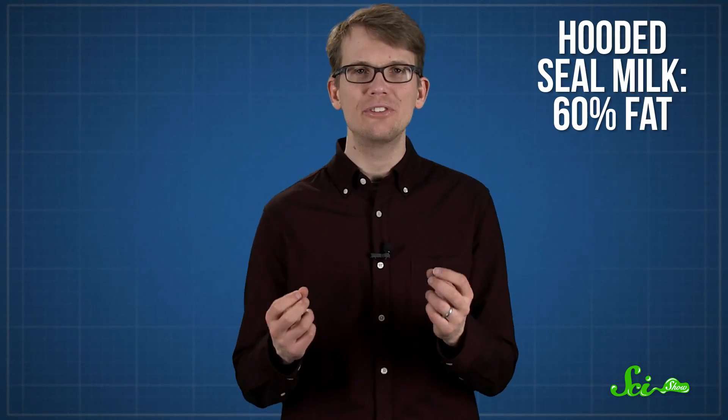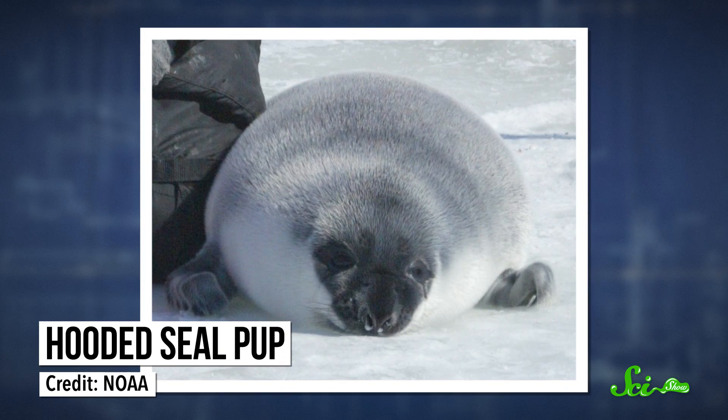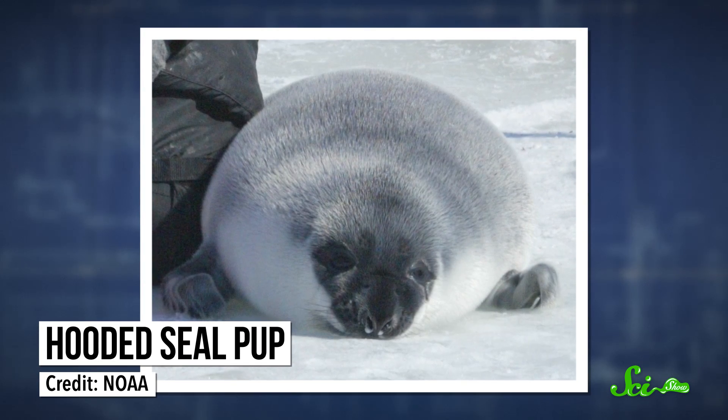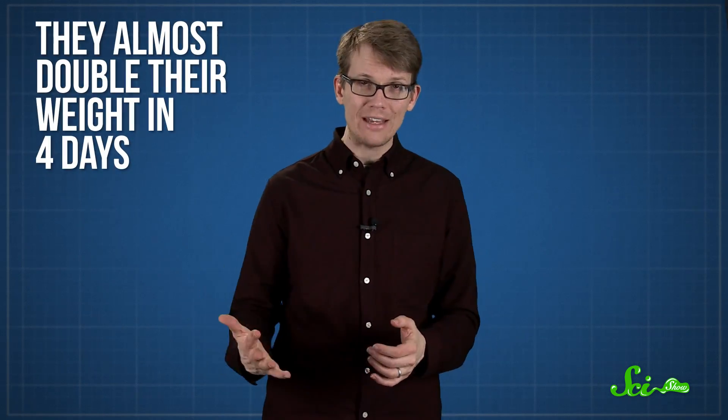These animal milks all have different fat content, because it depends on the animal's environment and the way that they nurse. If you're looking for the very fattiest known milk, you'll have to find a hooded seal. Their milk is about 60% fat. That's because hooded seal pups are born on floating sea ice in the North Atlantic and Arctic Oceans. The harsh temperatures and the instability of the environment mean that the pups have to put on a lot of fat really fast. They only nurse for about four days, but almost double their weight in that time.